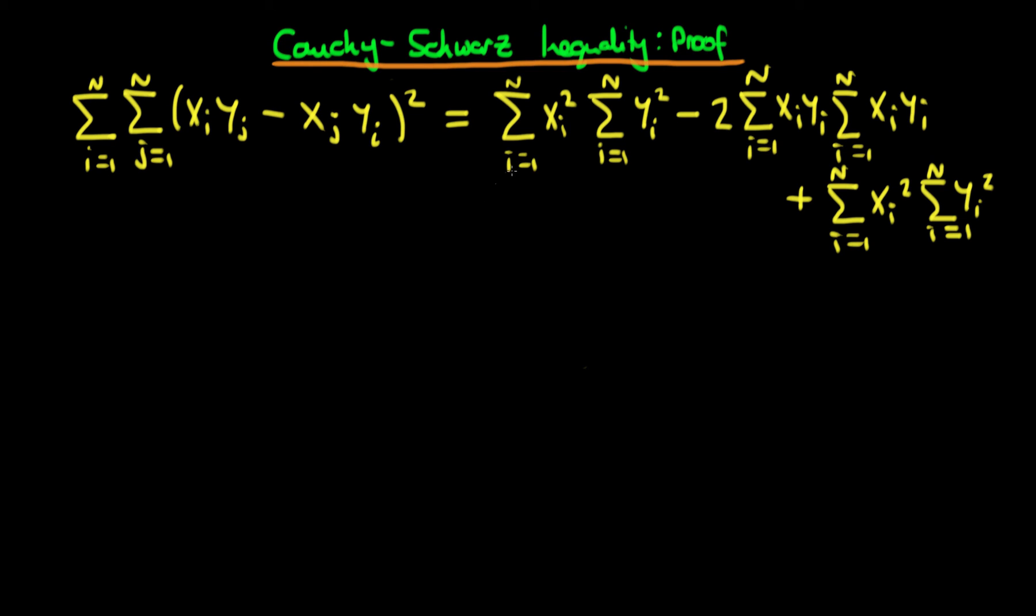But it's only a mess until you notice that the first term and the last term are exactly the same, so we can rewrite the right hand side as being equal to twice the sum from i equals 1 to n of xi squared times the sum from i equals 1 to n of yi squared.